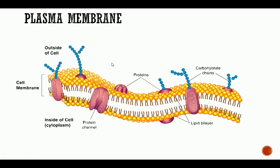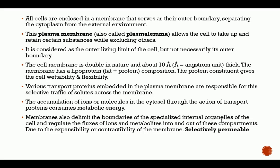I'll give you more details about this, but just familiarize yourself with the diagrams. You can see that the outside of the cell is where we have the carbohydrate chains, which connect to the cell wall, while the inside of the cell has no carbohydrate chains. Now, all cells are enclosed in a membrane that serves as their outer boundary, separating the cytoplasm from the external environment.